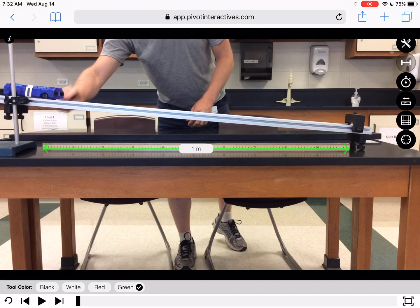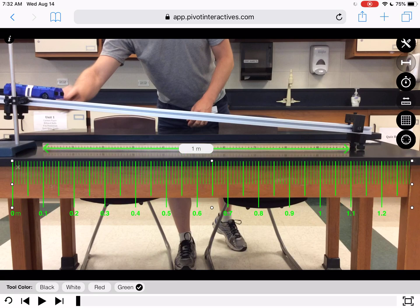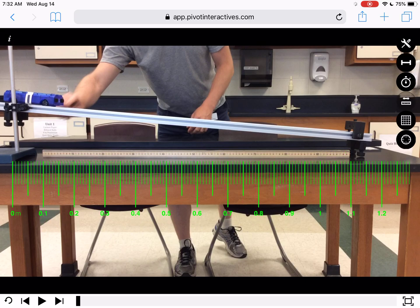Now when I bring up the meter stick or the ruler, you can see it's very sharp and all the numbers are in there. I'm going to turn off the calibration tool because I don't need to see it anymore.